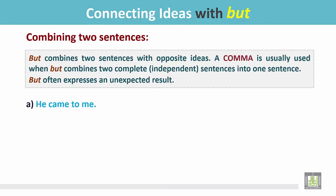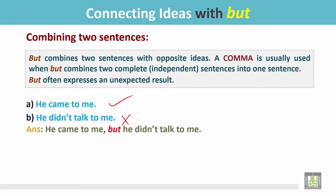Other examples: 'He came to me. He didn't talk to me.' In these two sentences, one is affirmative and the other is negative, but they express quite opposite ideas. So if we join with 'but': 'He came to me, but he didn't talk to me.' He was supposed to talk to me, but he didn't.